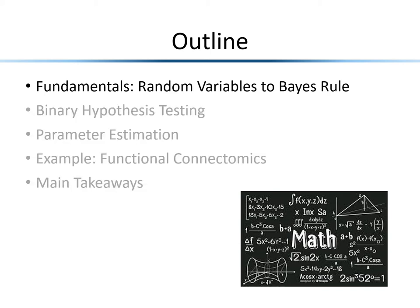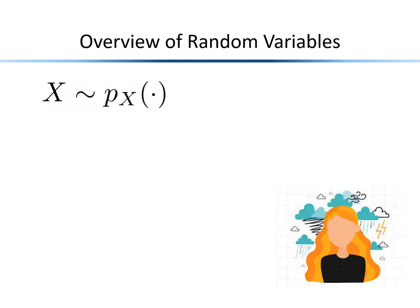Let's start with the fundamentals. The building block for our treatment of Bayesian learning is called a random variable — a quantitative measure, a numerical value, that is dependent on some underlying random experiment. Random variables depend on some underlying probability distribution. The notation on the slide shows the random variable X with a tilde meaning 'is distributed as,' with a subscript denoting the random variable of interest and an argument representing the actual observed value.